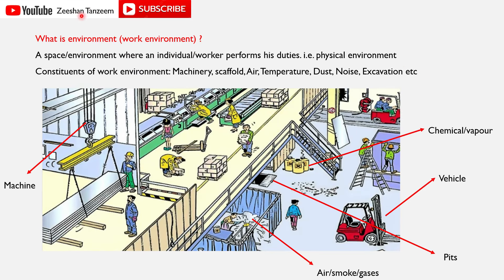अगला question — what is work environment? Safety में environment का मतलब: a space/environment where an individual worker performs his duties। Environment में machine, scaffold, हवा, temperature, dust, noise, excavation — ये सारे parts of environment हो जाते हैं।